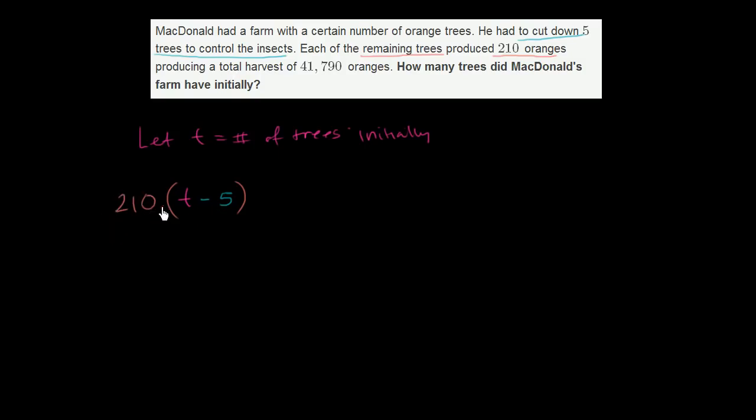So this is the total number of oranges produced after cutting the five trees. And then they tell us that this ends up being a total harvest of 41,790. So this is equal to 41,790.